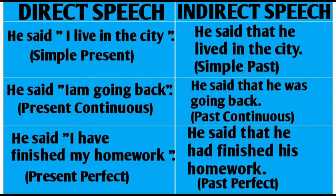He said, 'I live in the city.' This is direct speech in simple present tense form. When we change this into indirect speech, it becomes simple past: he said that he lived in the city. He said, 'I am going back.' This is in present continuous tense. When we change it into indirect speech, it becomes past continuous: he said that he was going back.